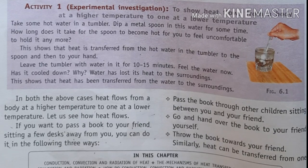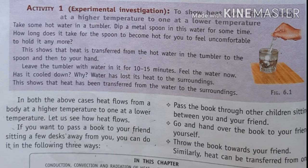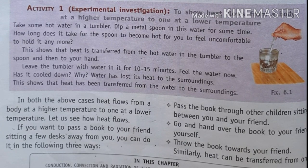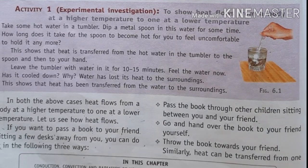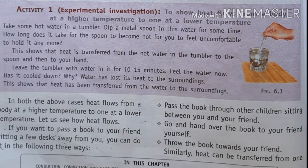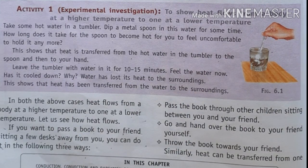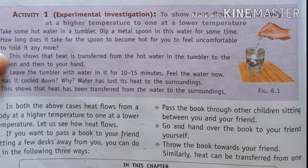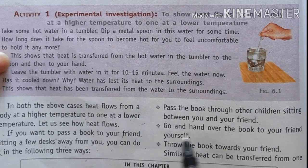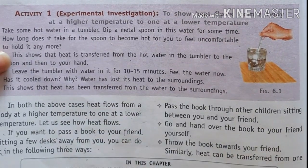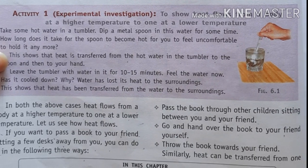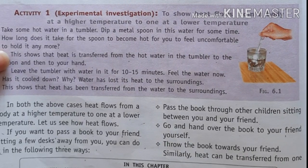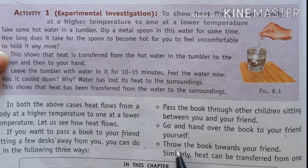Imagine you are sitting at the right corner and your friend is at the left corner, and there are four rows in class. The first way to pass the book is to pass it through other children sitting between you and your friend — one by one transferring the book. The second way is to get up and hand the book directly to your friend yourself. The third way, which many students do these days, is to throw the book towards your friend.